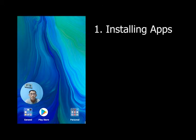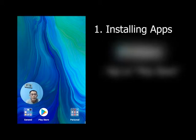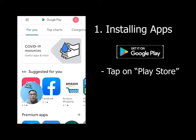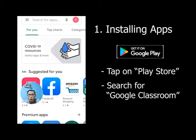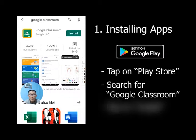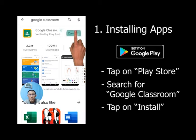Let's refresh on how to download the correct apps needed for classroom learning. For students who are using an Android phone, please launch the Play Store app by tapping on the icon. Search for Google Classroom and tap on Install.